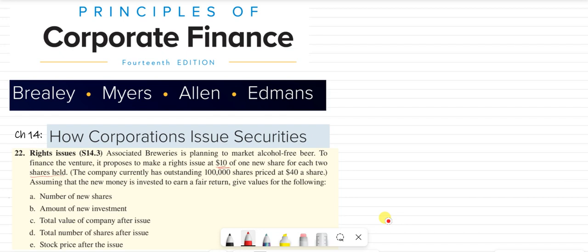ten dollars. The company currently has outstanding 100,000 shares priced at $40. So current price is $40, but the new shares, the right issue, is being offered at ten dollars. So there is no way that the existing shareholders will refuse this issue because it's being offered at a huge discount.